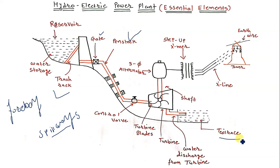Next is the tailrace. The tailrace is the waterway that leads water discharged from the turbine back to the river. Whatever water has struck the turbine blades is diverted toward the tailrace. When Francis or Kaplan turbines are used, the water level of the tailrace should be kept high enough to avoid cavitation near the runners.